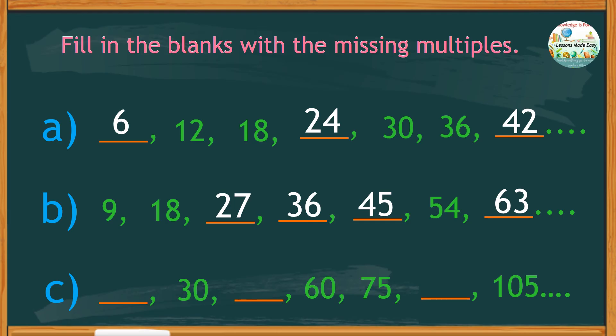And finally, set C. The missing multiples are 15, 45, and 90.